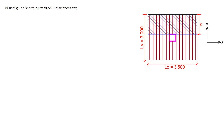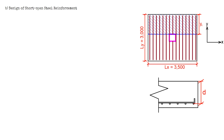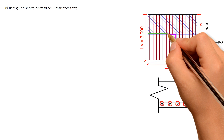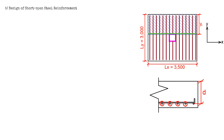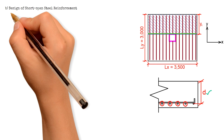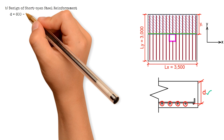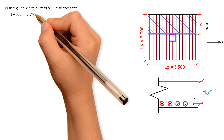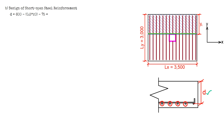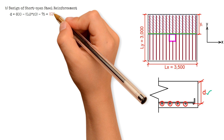In this diagram, the short span steel is parallel to the shorter dimension of the footing. The placement of the short span steel reinforcement is below the longitudinal steel. Cutting through this section, we calculate the effective depth D as the thickness 600 mm, minus 0.5 times the diameter 20 mm, minus concrete cover 75 mm, giving a value of 515 mm.